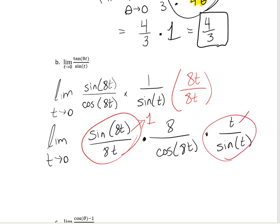The same thing happens with 8t over sine of t — that also goes to 1. And if I plug 0 in for t in cosine of 8t, cosine of 0 is just 1. So what I'm left with is 1 times 8 times 1, which gives me 8.